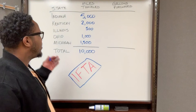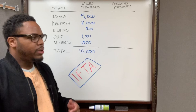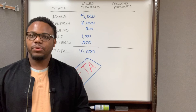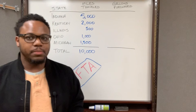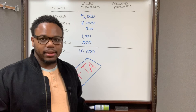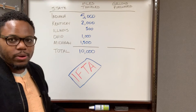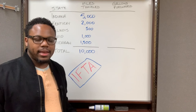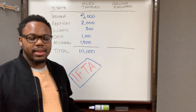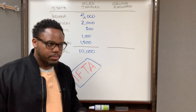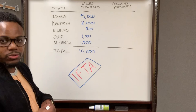Once we have the miles traveled, the next important thing we need is how many gallons of fuel we purchased in each state. When you're buying fuel, you're going to get a receipt. For clients who don't have a fuel card and just buy fuel as they need it paying cash, they drop off receipts to me. I go through each receipt and separate them by state — all Indiana fuel receipts in one category, all Kentucky receipts in another. Once separated by state, I tally up how many gallons of fuel were purchased in each state using my calculator or spreadsheet.